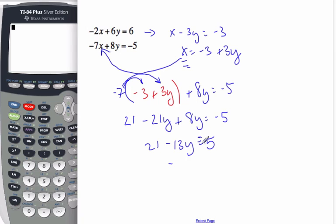Still got negative 5 on that side. Subtract over the 21 gives me a negative 26. And divide by negative 13. And we get positive 2.